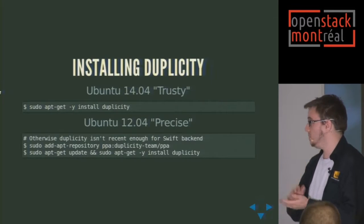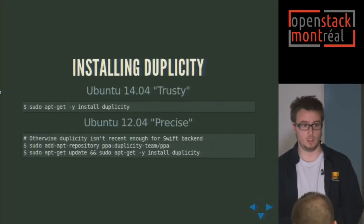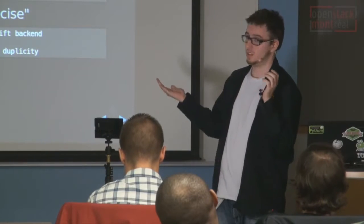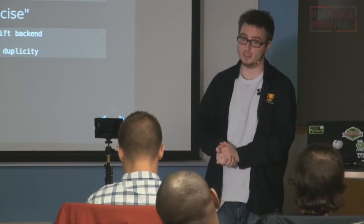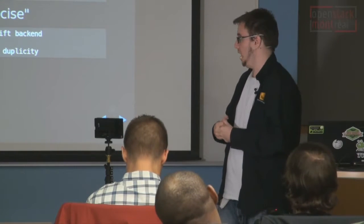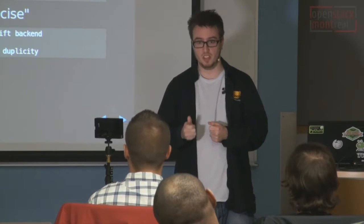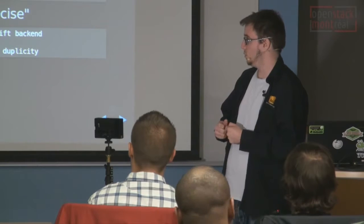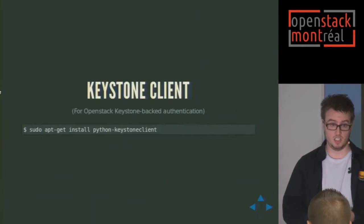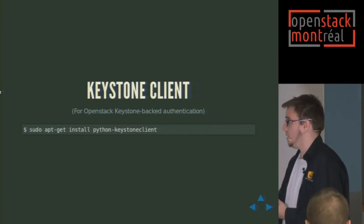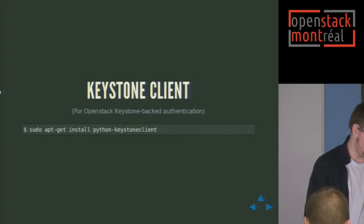Installing Duplicity — it's packaged upstream by Ubuntu. We'll talk mostly about Ubuntu with our current setups. It's packaged by Ubuntu, and if you want the Swift backend and you're using Ubuntu Precise, it's still maintained by the Duplicity maintainer team, but you'll want the PPA if you're using Precise. If your Swift deployment is backed by Keystone, which is the OpenStack authentication service, Duplicity doesn't install the Keystone client for you, so you need to install it either through apt or pip directly from PyPI.